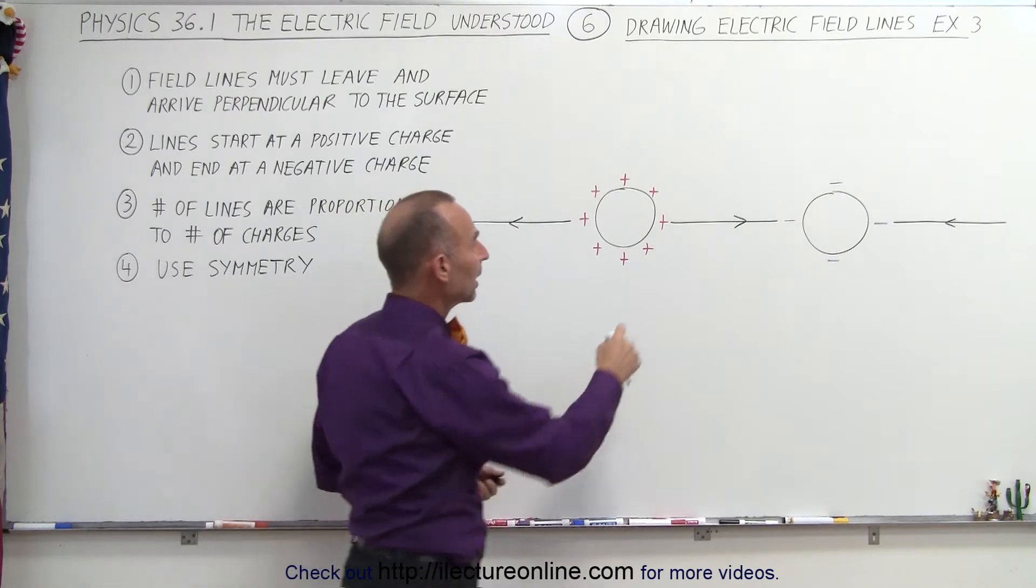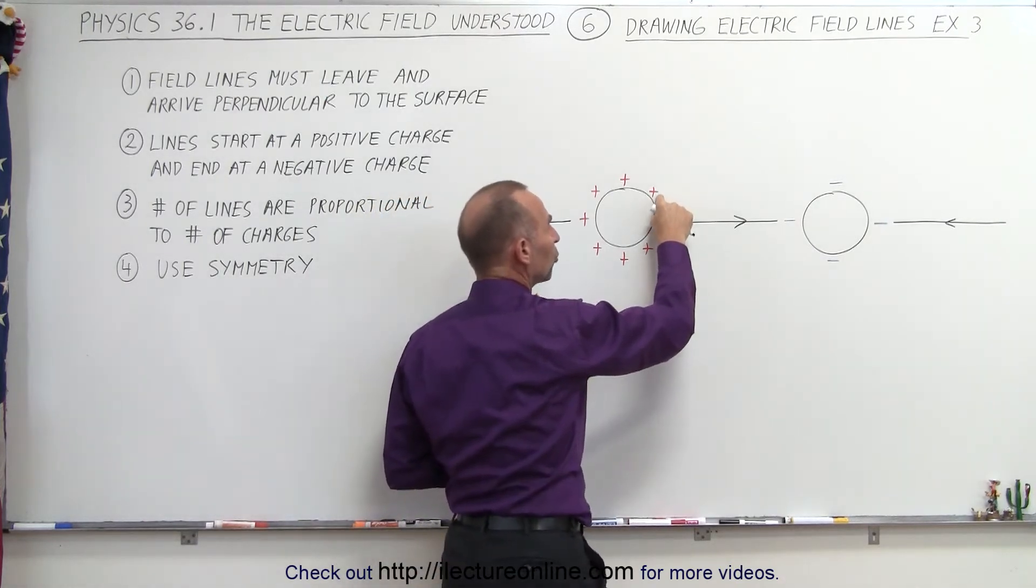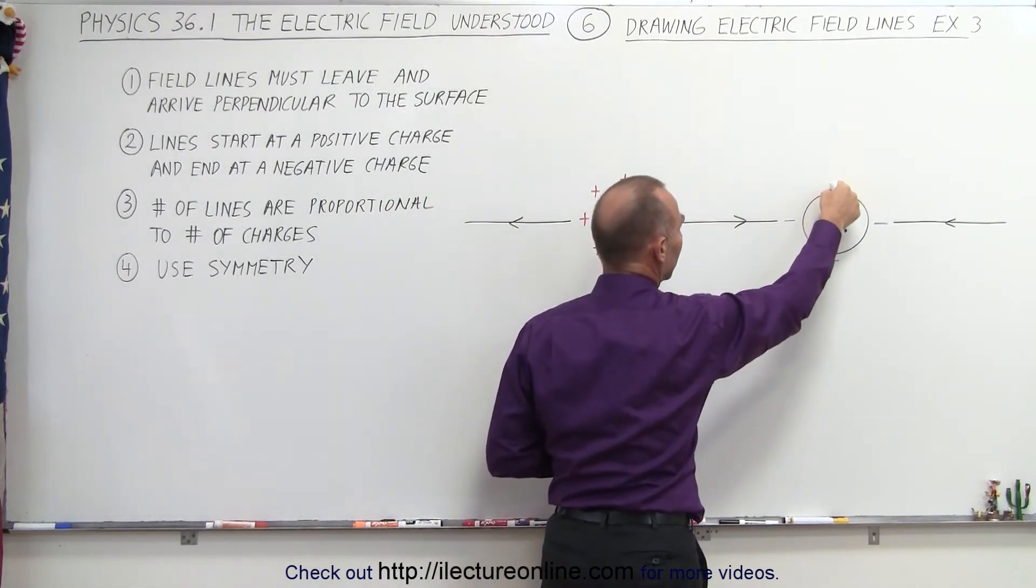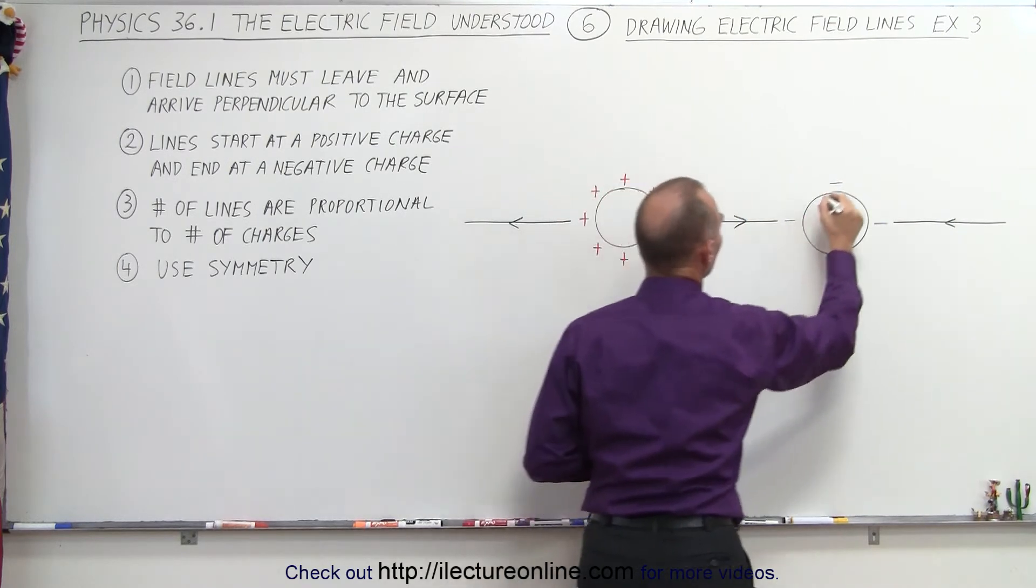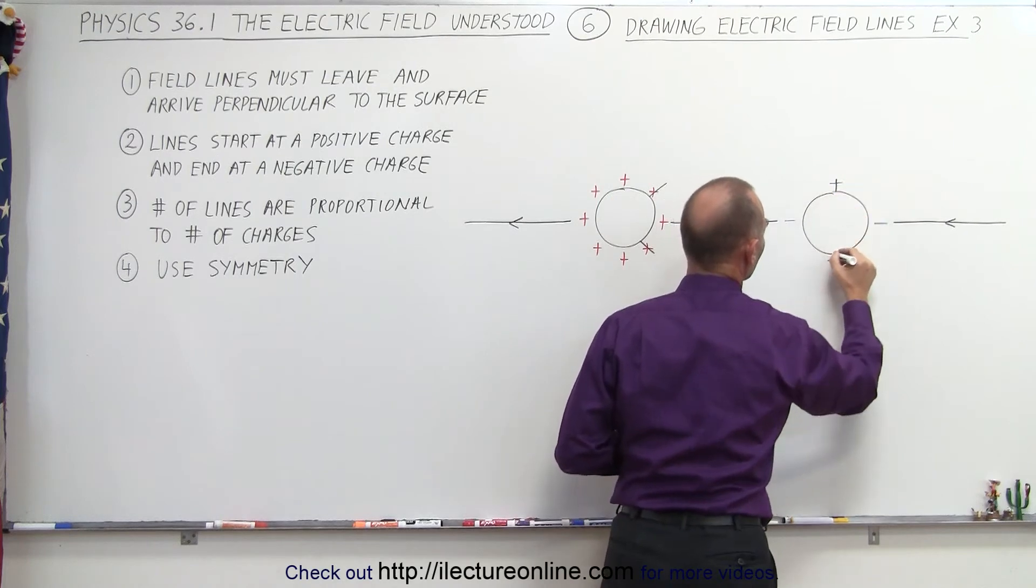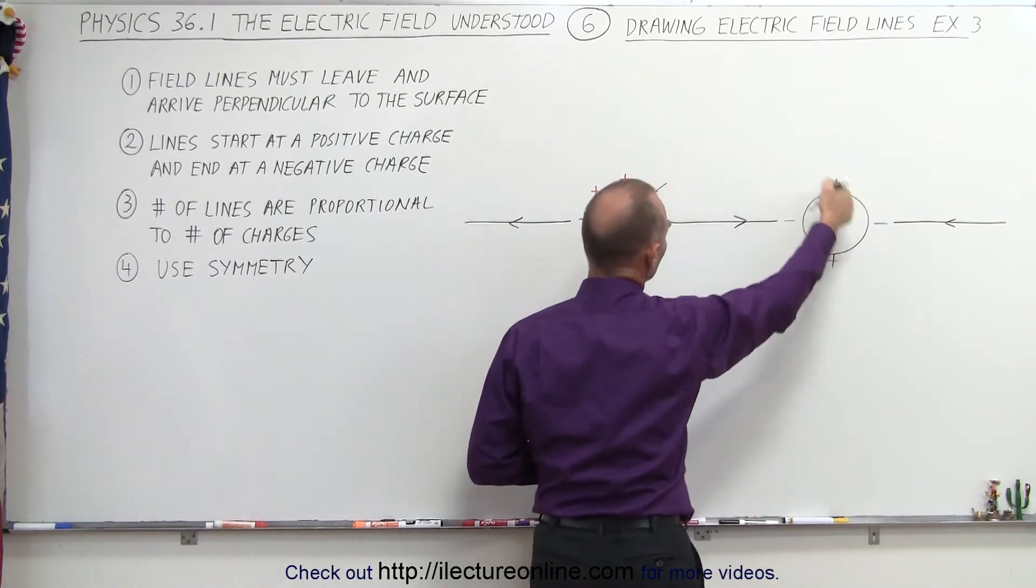Well, we go to the next charge over here. And this charge will indeed have a field line terminating at this charge right here. So we'll leave perpendicular to the surface this way and arrive perpendicular to the surface this way. So now we make the connection.